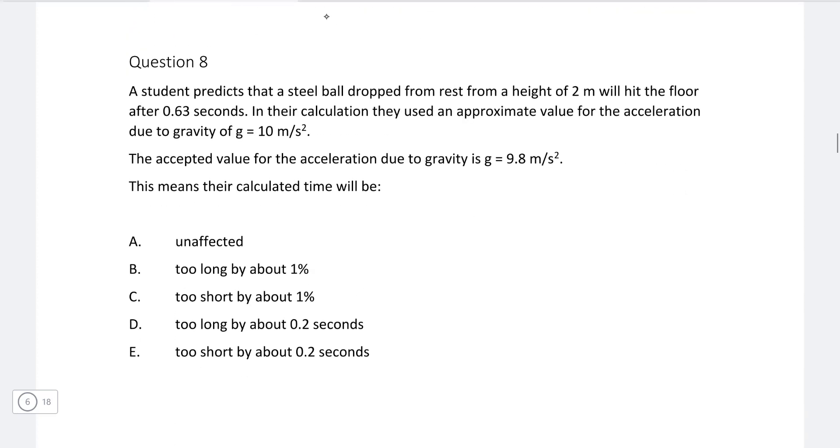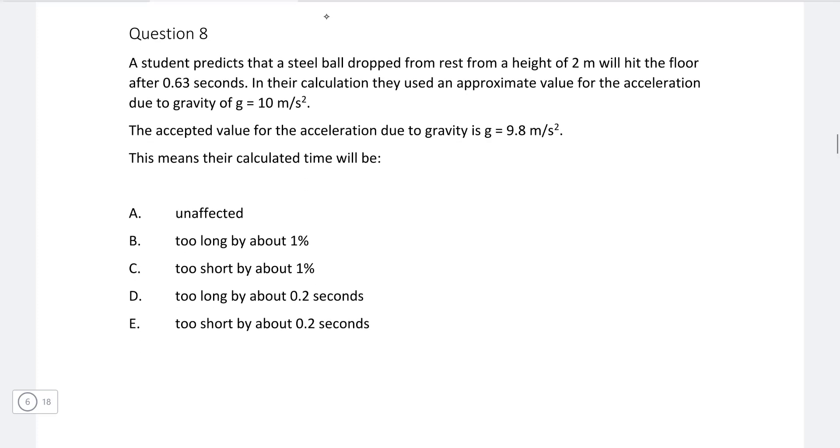Okay, question eight. A student predicts that a steel ball dropped from rest from a height of two meters will hit the floor after 0.63 seconds. In their calculation they used an approximate value for the acceleration due to gravity to be 10 meters per second squared, and the accepted value is around 9.8. This means that the calculated time will be?